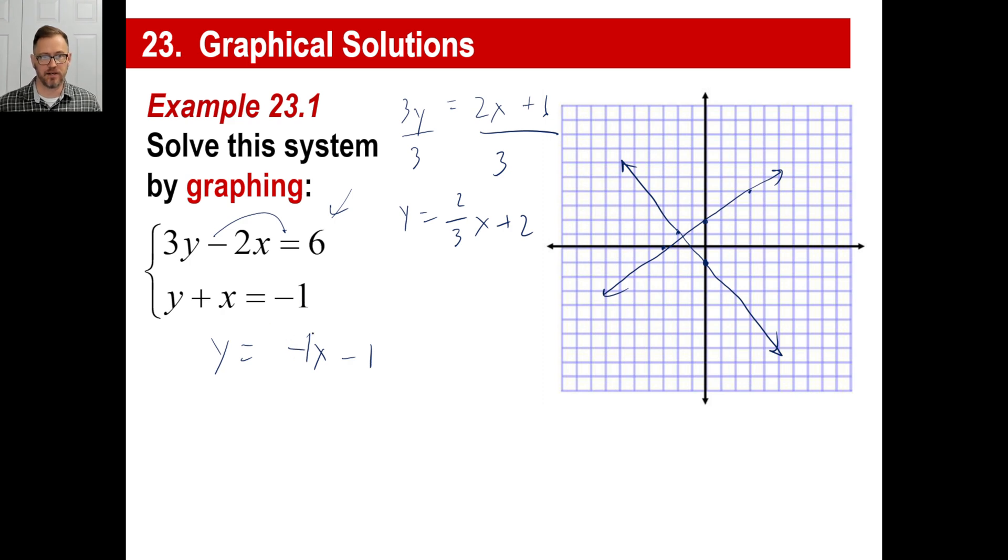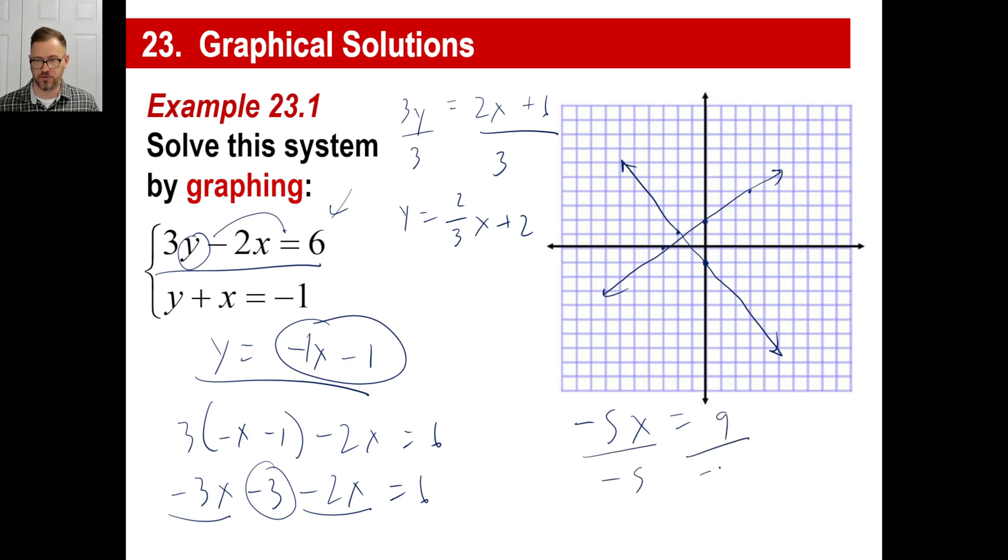Let's just actually do this. If y is equal to negative x minus 1, let's go to this equation here. So we got 3 times negative x minus 1 minus 2x equals 6. I just took this and I stuck this in for that y. So negative 3x minus 3 minus 2x equals 6. That gives us negative 5x, and then I'm going to move the 3 over that turns it into plus 6 is 9. And then I divide by negative 5, and the answer is 9 over negative 5.